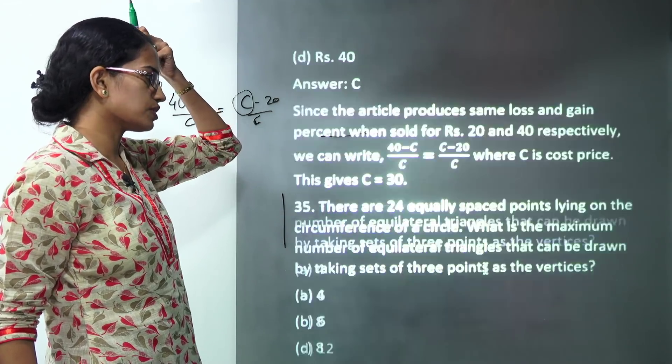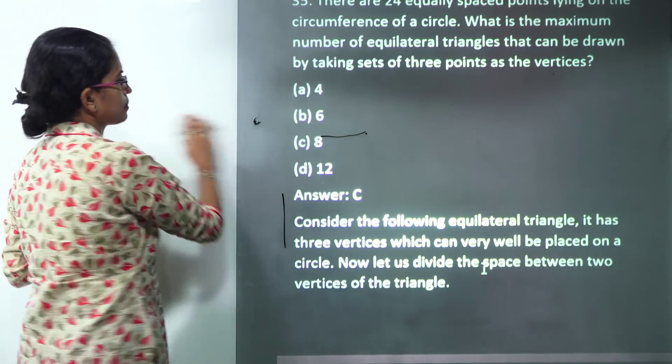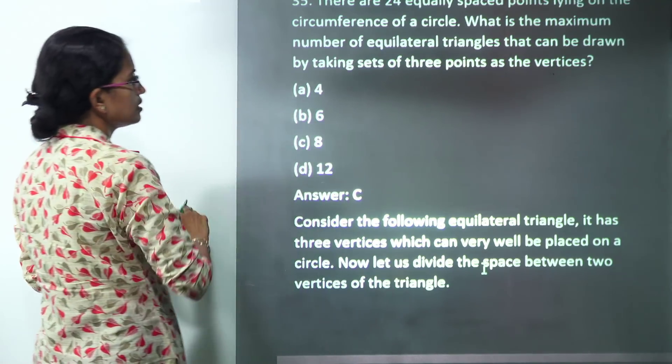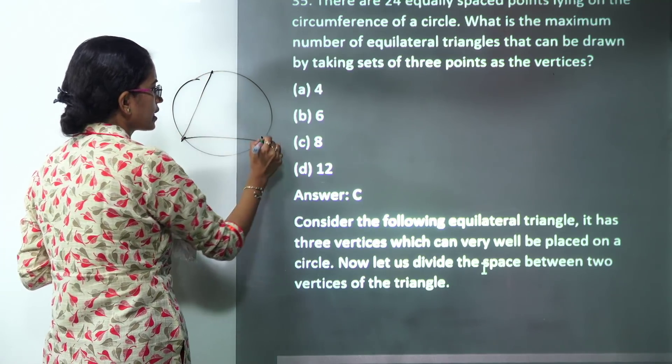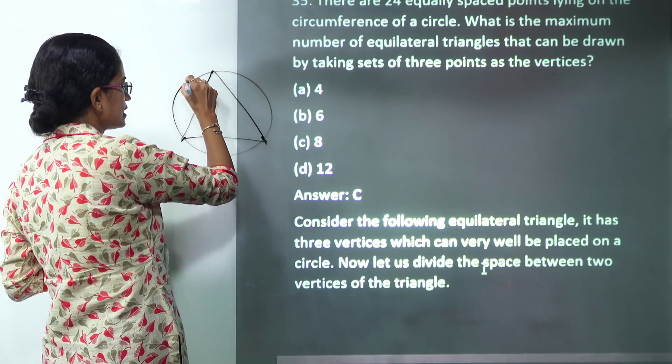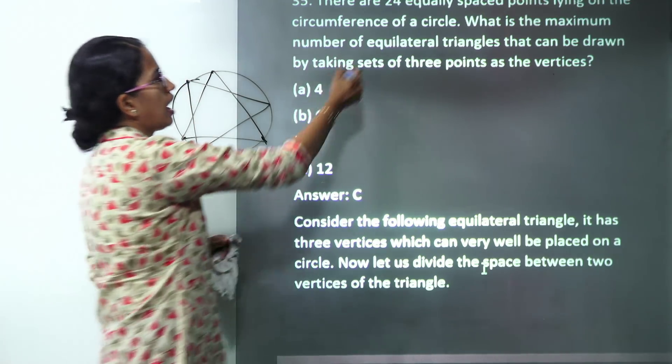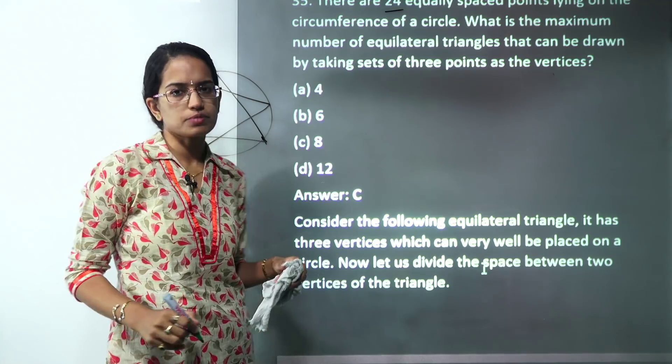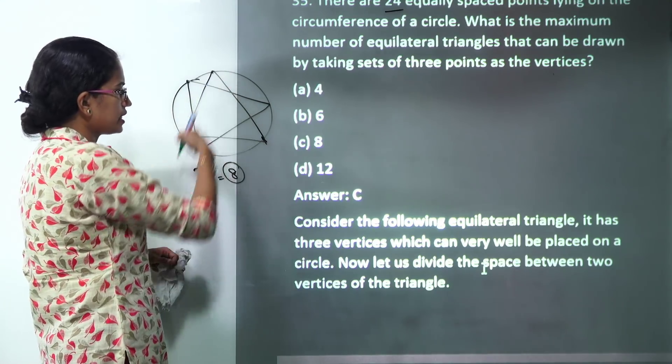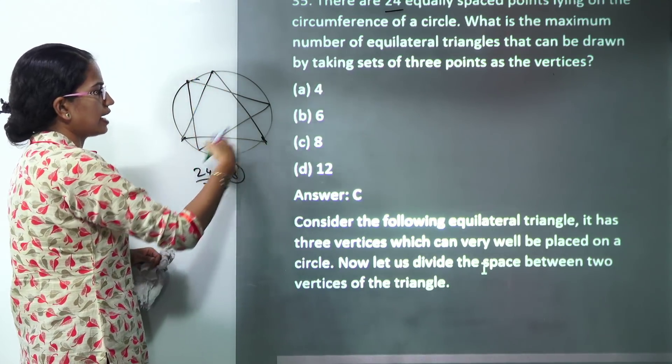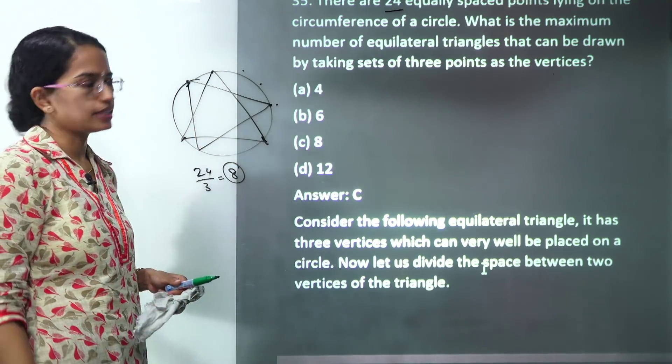The next question is a kind of logical question. There are 24 equally spaced points on a circumference of a circle. So let's say you have one point, two point and three point. So with this three point I can make one triangle. I take another point, another point and another point. So with this three point I can make another equilateral triangle. How many equispaced points are there? 24 equispaced points. So how many triangles could be made would be eight. For each triangle are required three points which are equidistant and at 60 degrees. So eight such triangles could be drawn. So the correct answer would be eight here.